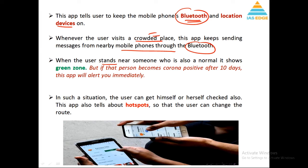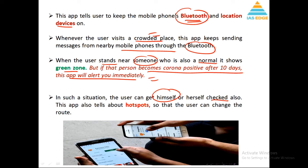When a user stands near someone who is normal, it shows the green zone. But if that person tests corona-positive 10 days later, the app will alert you immediately. That communication data is already stored. So 10 days later, if the person you were near becomes corona-positive, everyone who communicated via Bluetooth will be notified that this person is corona-positive — which means you are not safe. In that situation, you can get yourself tested.